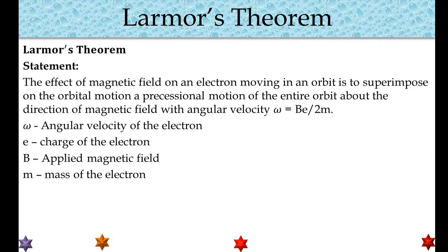The statement of Larmor's Theorem: The effect of magnetic field on an electron moving in an orbit is to superimpose on the orbital motion a precessional motion of the entire orbit about the direction of magnetic field with angular velocity ω = Be/2m. Here ω is the angular velocity of the electron, e is the charge of the electron, B is the applied magnetic field, and m is the mass of the electron.